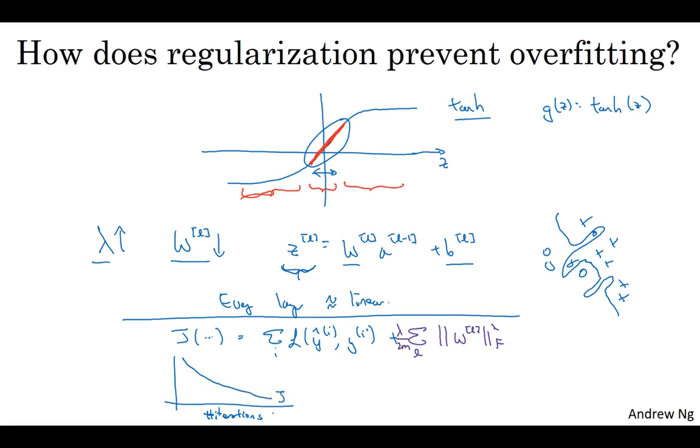And you want to see that the cost function J decreases monotonically after every iteration of gradient descent. And if you're implementing regularization, then please remember that J now has this new definition. If you plot the old definition of J, just this first term, then you might not see it decrease monotonically. So to debug gradient descent, make sure that you're plotting this new definition of J that includes the second term as well.